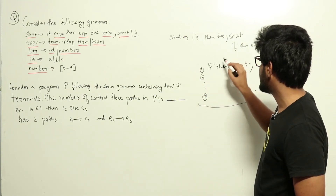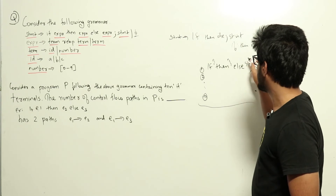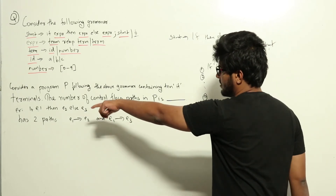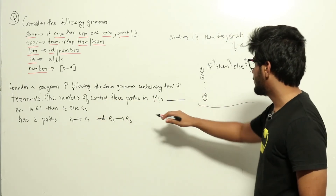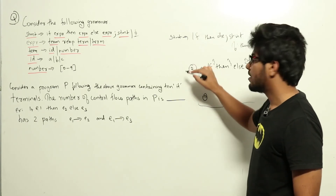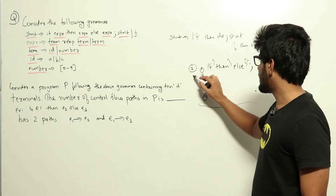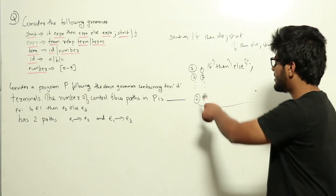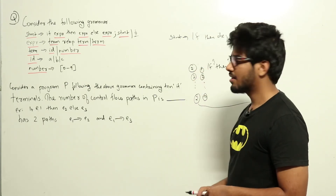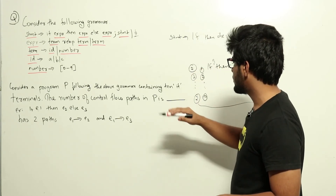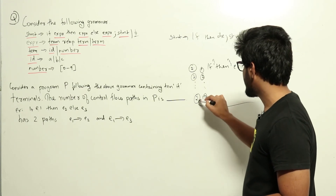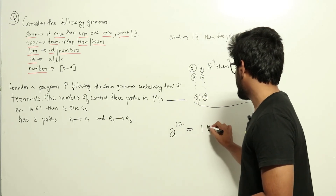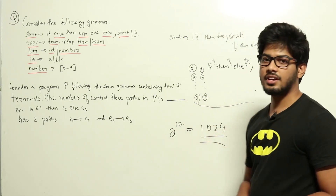The first statement can take two paths — if e1 then e2 else e3. There are two control flow paths. Similarly, each of the 10 statements also has two control flow paths. So the total number of control flow paths is 2 × 2 × ... (10 times) = 2 raised to 10 = 1024. So 1024 is the answer to this question.